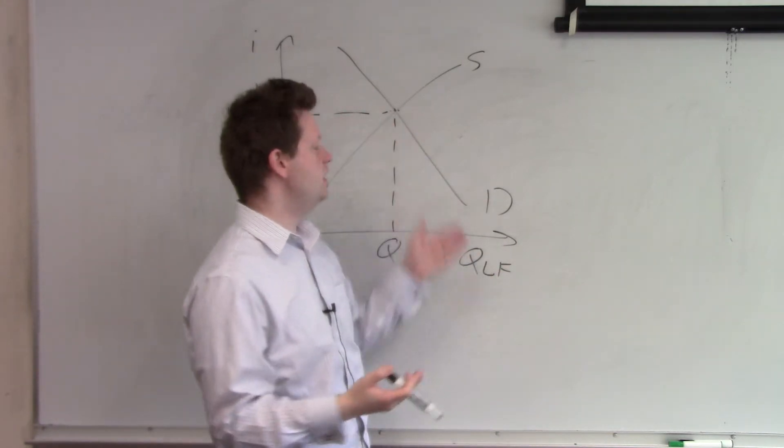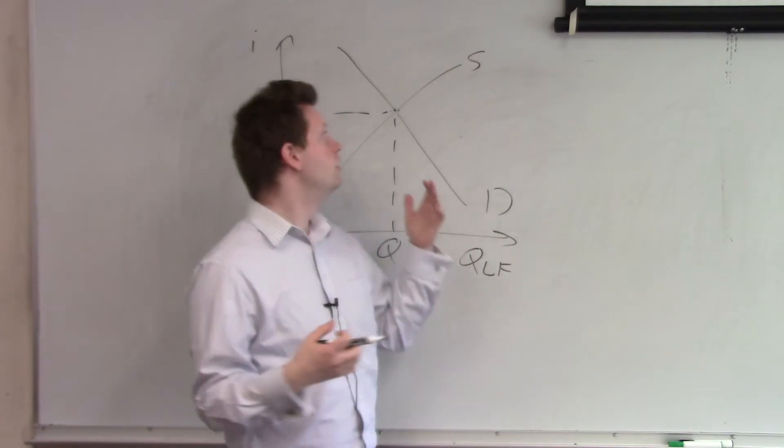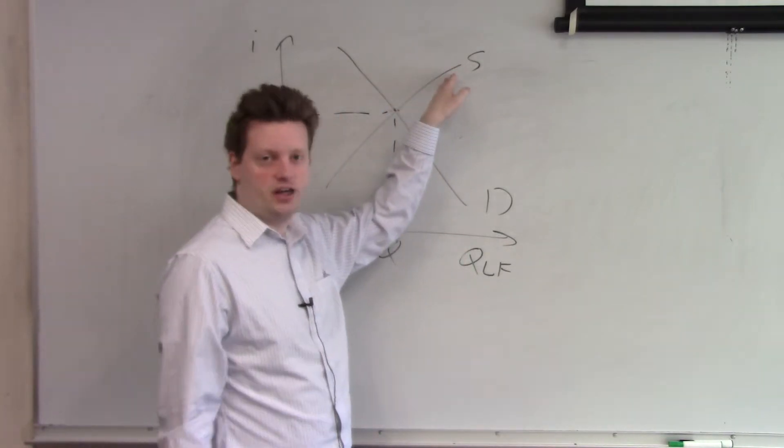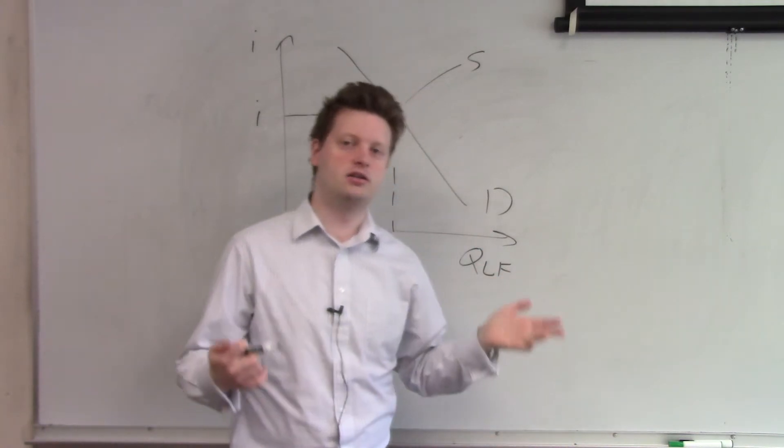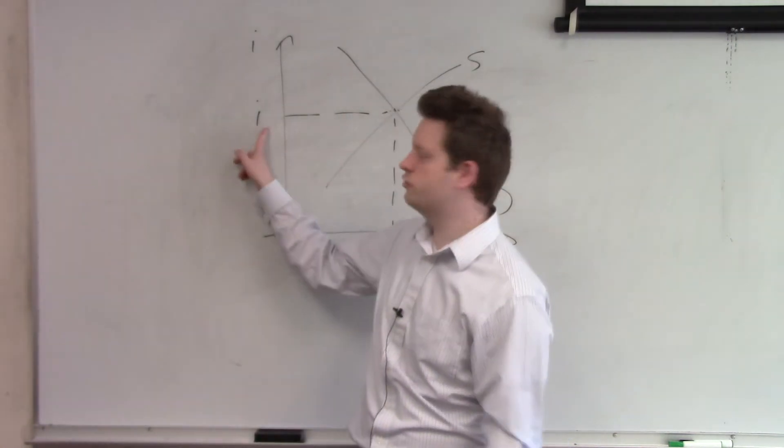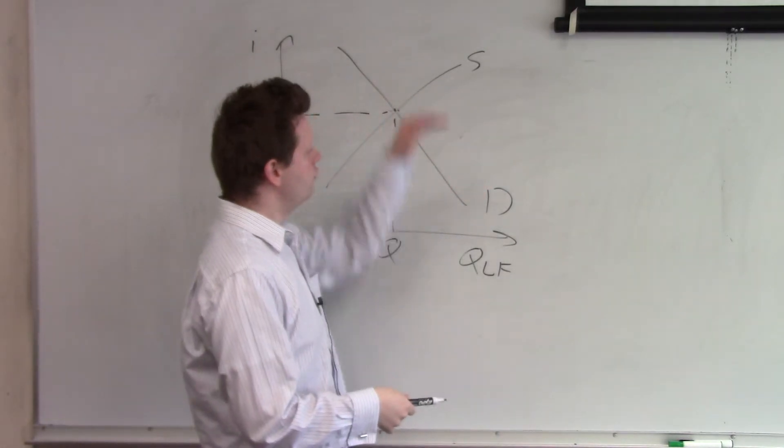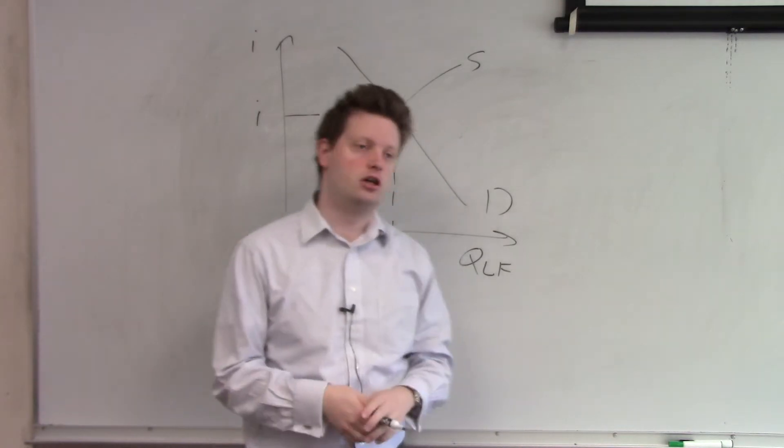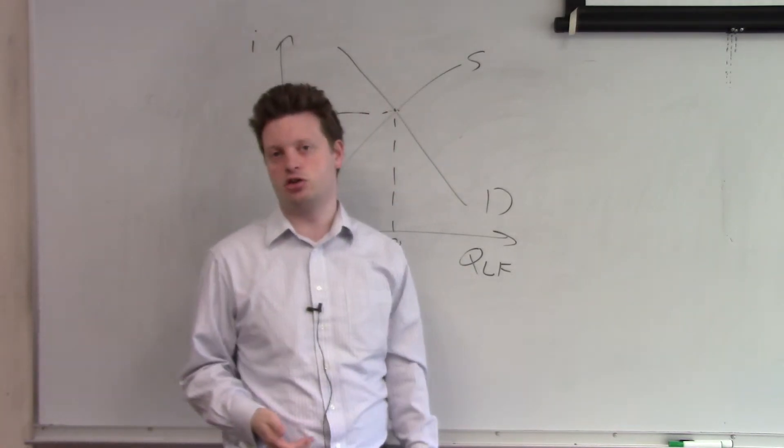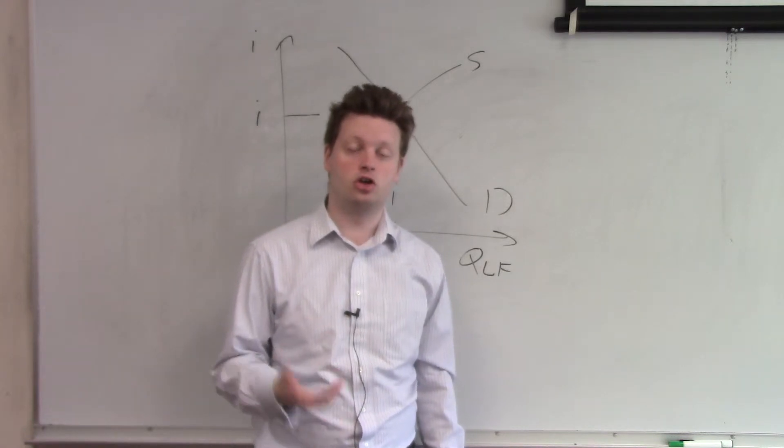Now, what does affect demand? Well, that's relatively similar to supply. Anything that affected savings affected supply. Anything that affects borrowing affects demand. Again, the interest rate is exempt. So if I change the interest rate, we move along the demand curve. But if we change tax incentives for research and development, for example, then we shift the demand curve.